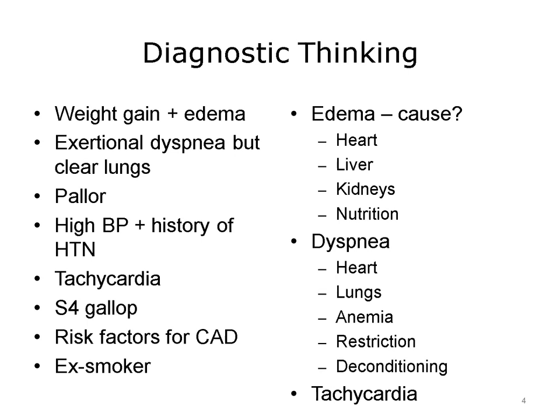In some countries, edema may result from severe malnutrition, although this is rare in the United States. The differential diagnosis also includes shortness of breath, or dyspnea, which may result from heart disease, lung disease, anemia, physical restriction due to obesity, or deconditioning due to inactivity. Some conditions appear on both lists — for example, hypertension could cause both edema and dyspnea — providing clues to the diagnosis. However, this kind of reasoning goes only so far in reaching an accurate diagnosis.